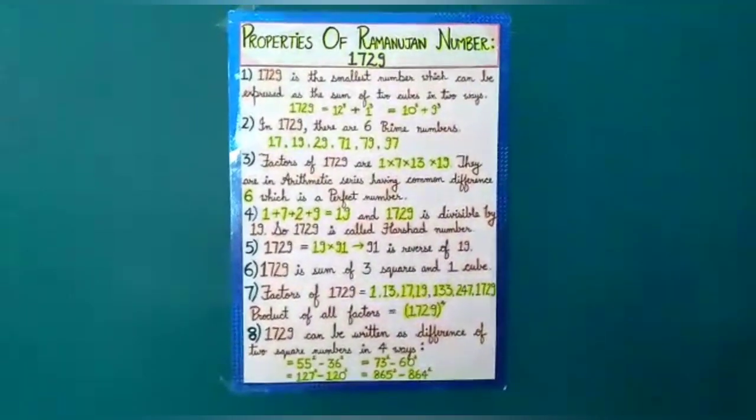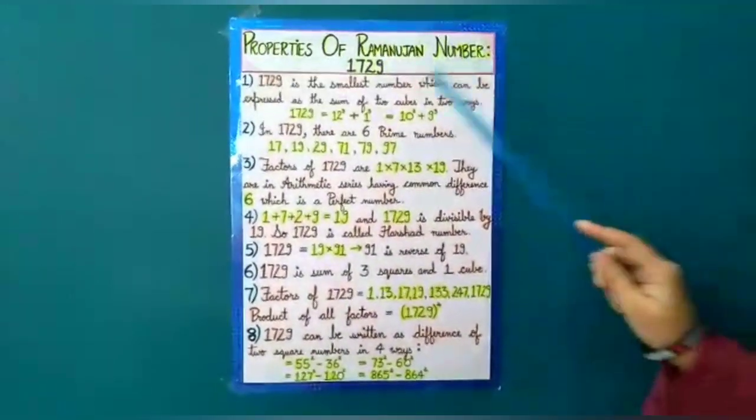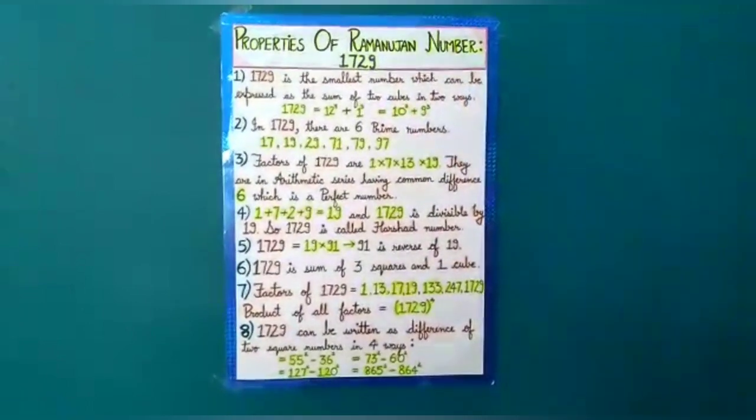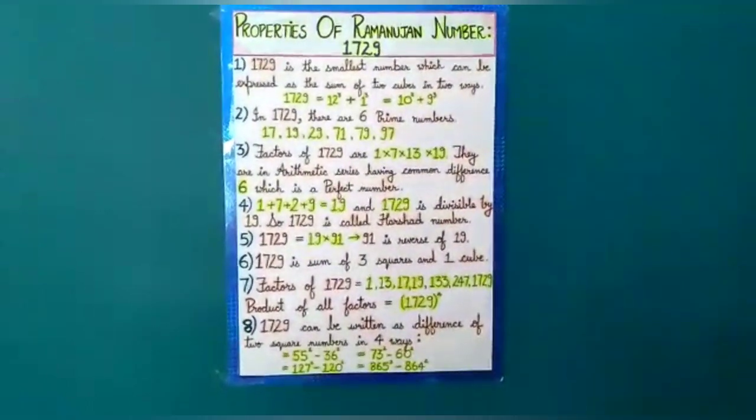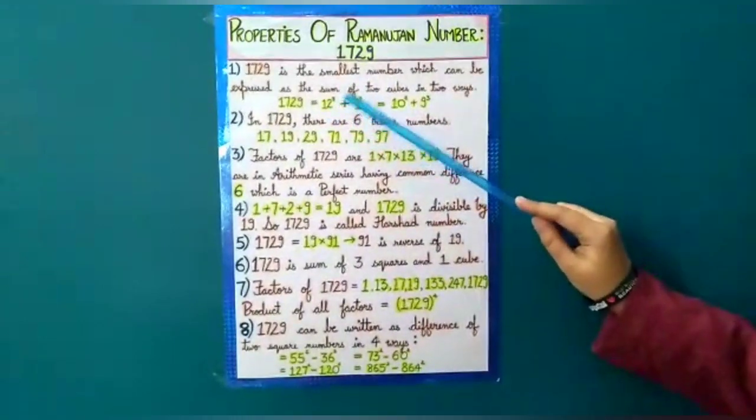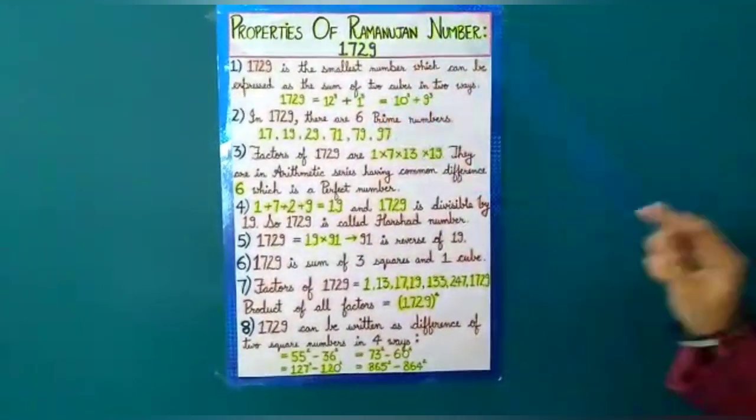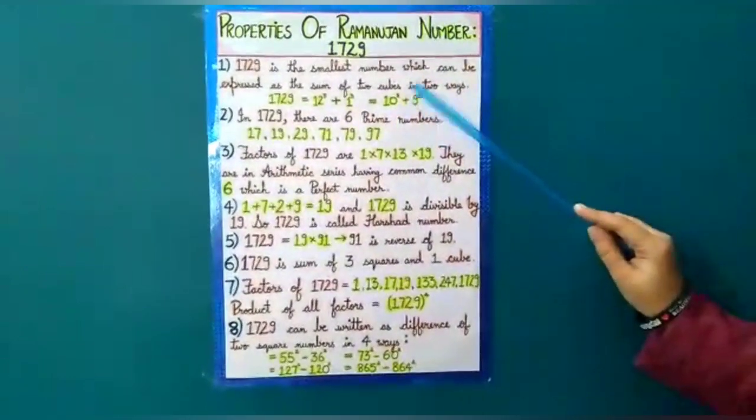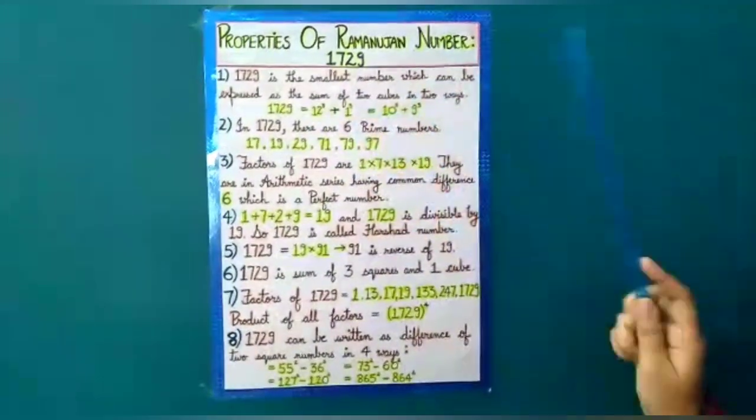The first property is 1729 is the smallest number which can be expressed as the sum of two cubes in two ways. Let's see what it means: that is 12 to the power 3 plus 1 to the power 3, and 10 to the power 3 plus 9 to the power 3 equals 1729.